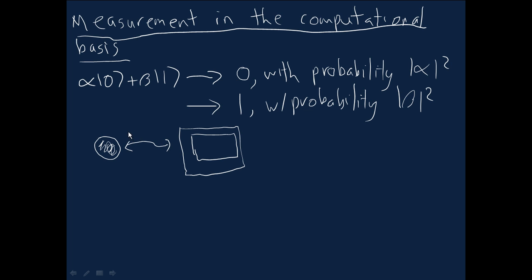And it might be that you get the outcome zero or maybe instead you get the outcome one, just depending on which outcome you get for the measurement in the computational basis.